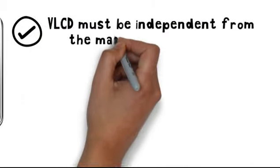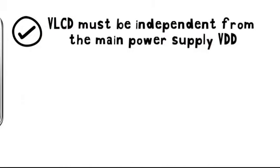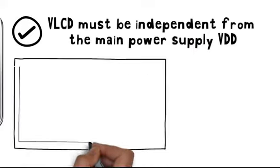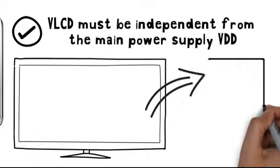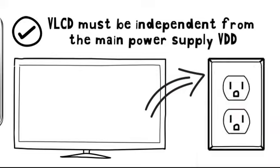VLCD must be independent from the main power supply, VDD, in order to select the LCD voltage value and then optimize the display contrast independently from the VDD supply.